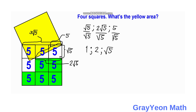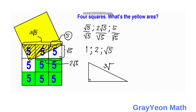Next, we extract this right triangle — it is a right triangle because it comes from a square. For the extracted triangle, the hypotenuse is 3√5. We label the shorter leg as a and the longer leg as b. Note that b is actually the side length of the yellow square, while a is the other leg.